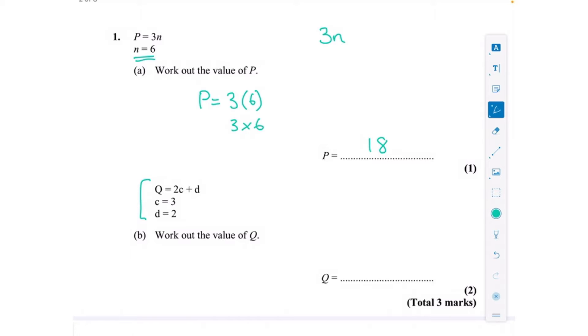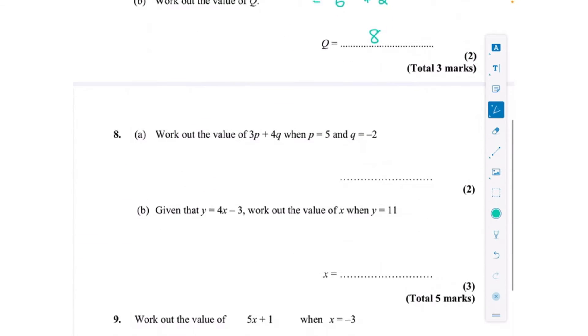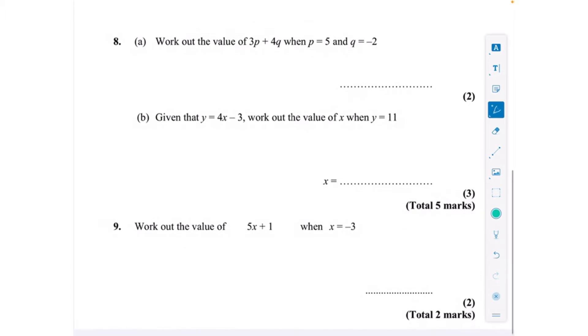Well q would equal two lots of c. Two lots of c is the same as two lots of three because we're told that c is 3, and then we need to add on d which is 2 because we're told that d is 2. Working this out, two lots of three is 6, add on 2 means that q is 8.